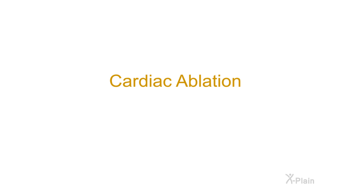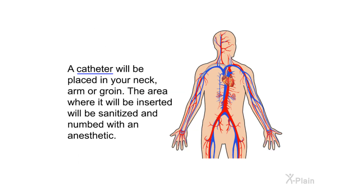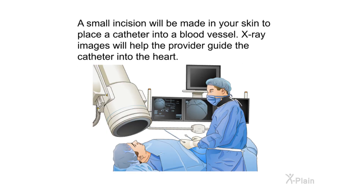Cardiac ablation. Cardiac ablation is done in a health care facility. Before the procedure, you will be given medication to help you relax. A catheter will be placed in your neck, arm, or groin. The area where it will be inserted will be sanitized and numbed with an anesthetic. A small incision will be made in your skin to place the catheter into a blood vessel, and X-ray images will help the provider guide the catheter into the heart.